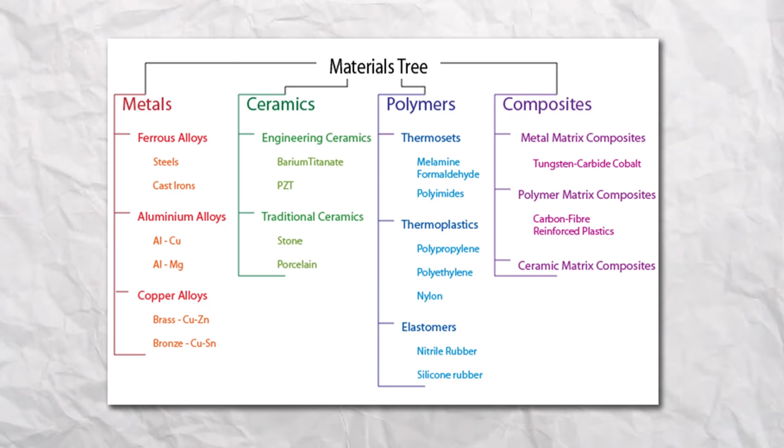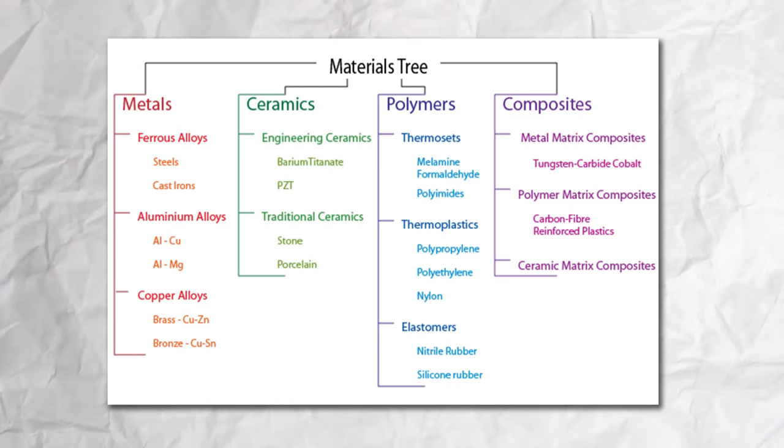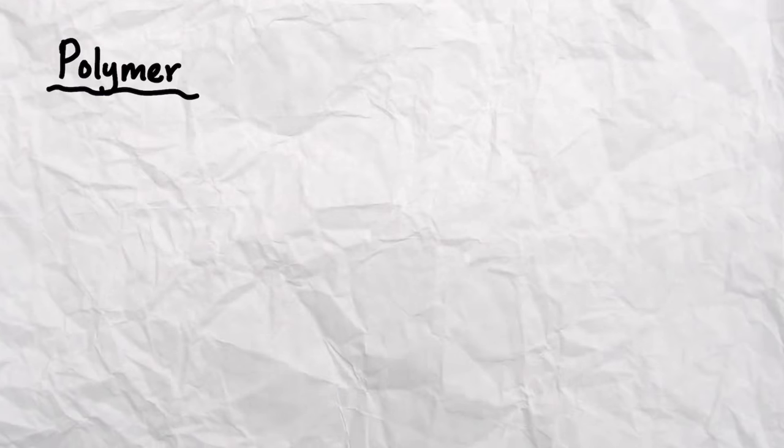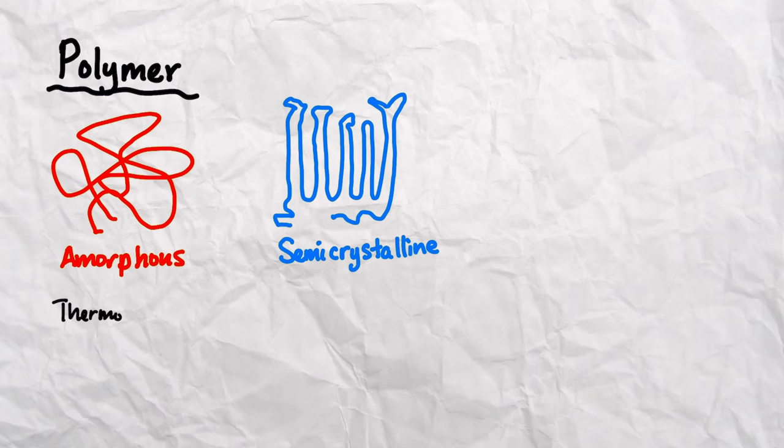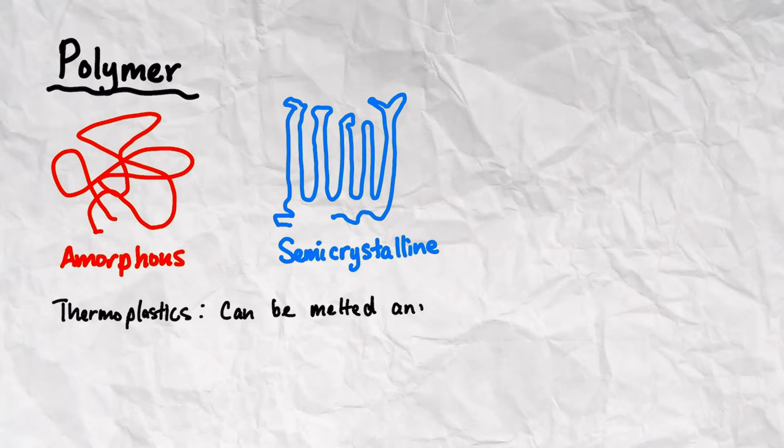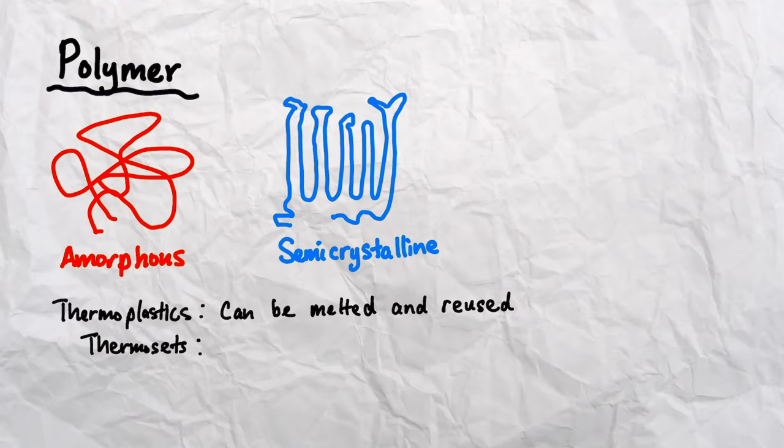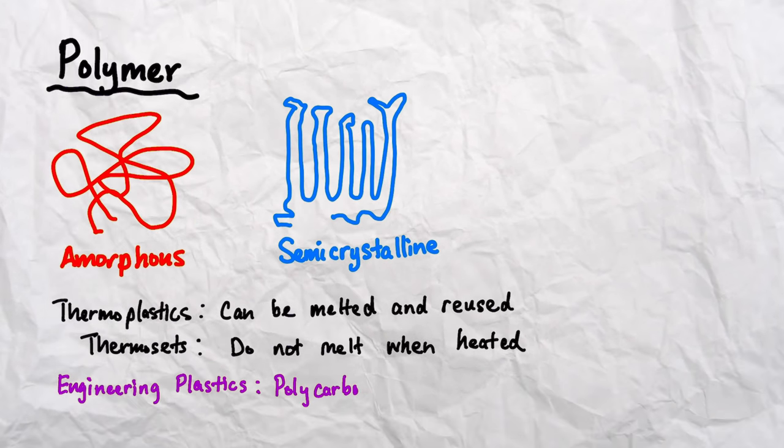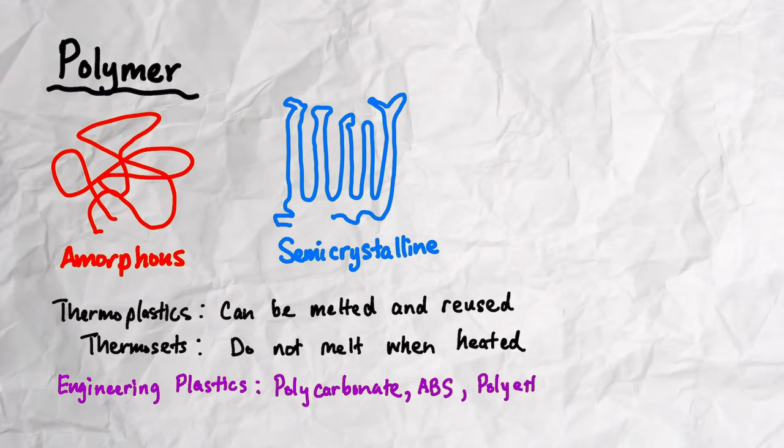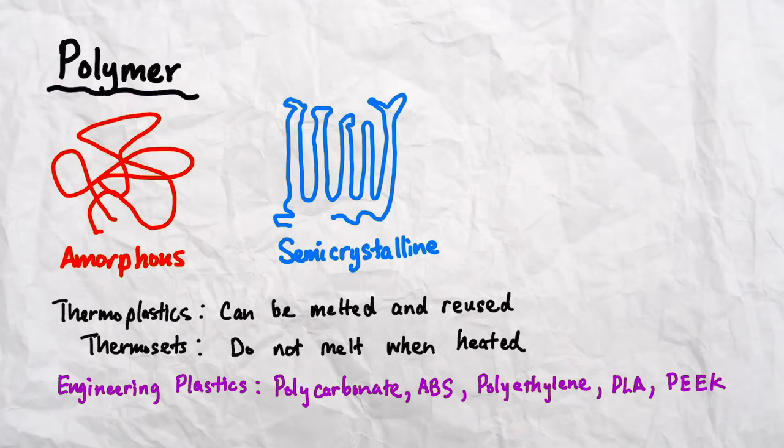Important topics that you should know include the structure and properties of materials, including metals, polymers, ceramics, and composites. For example, the structure of polymers is either amorphous or semi-crystalline. Thermoplastic polymers can be melted and reused while thermoset polymers do not melt when heated. You should also be familiar with different types of engineering plastics such as polycarbonate, ABS, polyethylene, PLA, and PEEK. Expect to be asked about some of these materials in a job interview, including their material properties and applications.